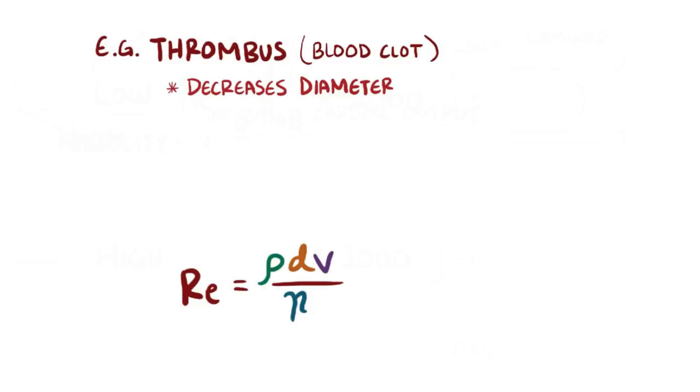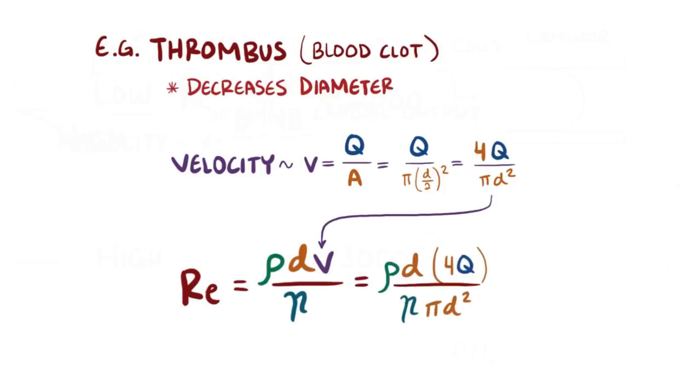But it turns out that the blood velocity also depends on the diameter of the vessel. By the equation, velocity equals flow rate q over area, where the area is the area of a circle, which is pi times d over 2 squared, and this comes out to be 4q over pi d squared. Taking that and plugging it in for velocity, we now see that as the diameter decreases, Reynolds number increases.